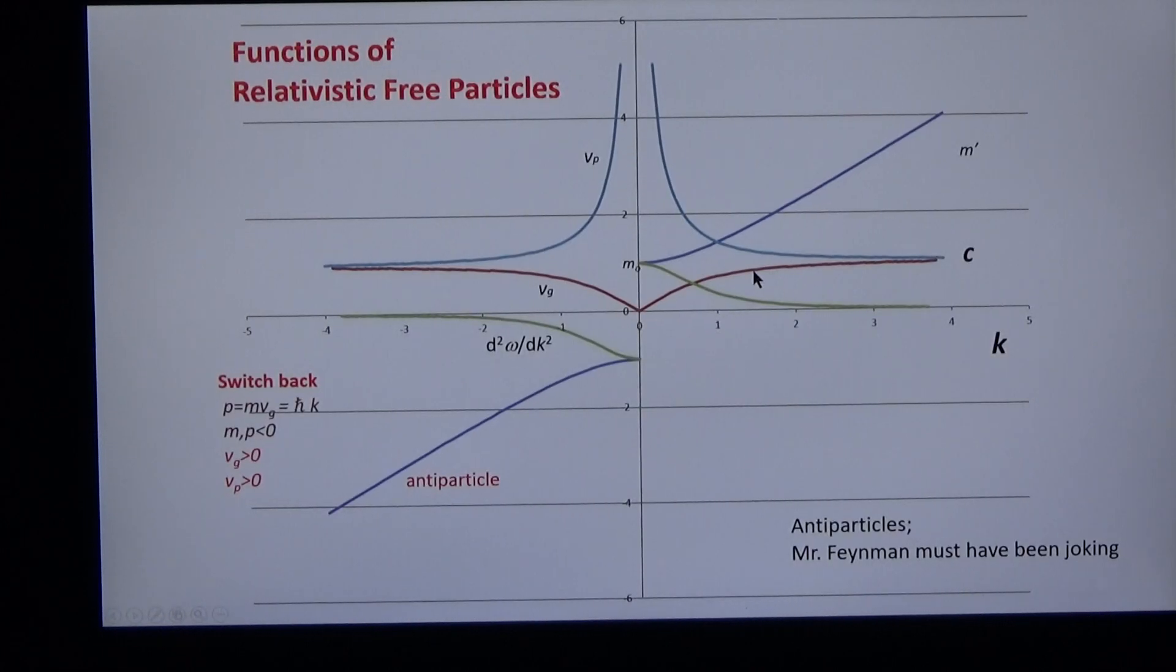The group velocity is well known to you. It's the speed of a particle. In special relativity, it tends to zero. At low k, it tends to the speed of light at high k. And the phase velocity is faster than light. You measure it as the inverse of the group velocity or as the ratio of energy over momentum.